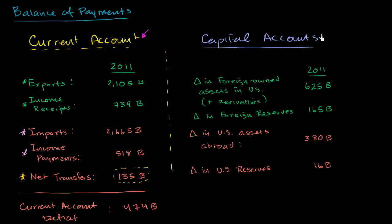Now when we look at the capital account in this video — I wrote capital accounts, there should be an S there — we'll look at other ways, or other reasons, why we might have inflows or outflows of payments. The capital account is focused on the change in assets that either foreigners own in the US, or that US nationals own of assets that are someplace else.